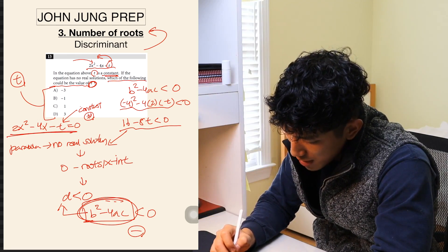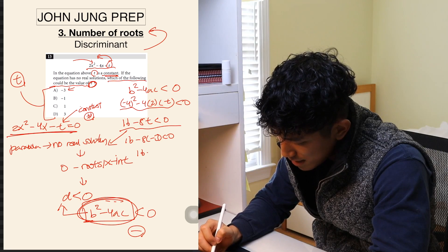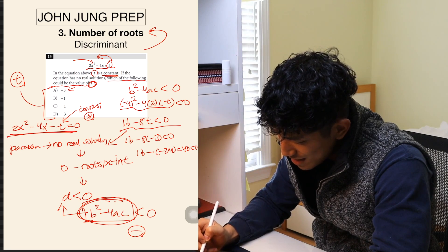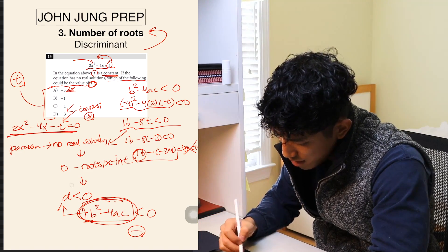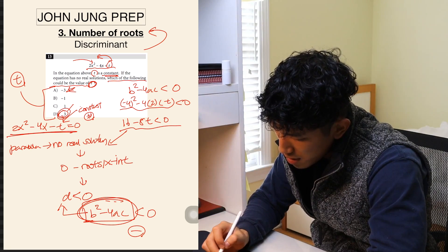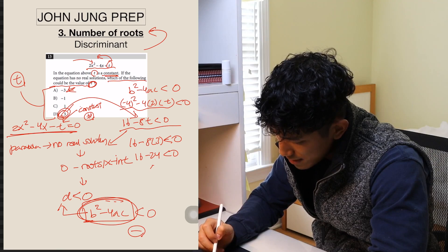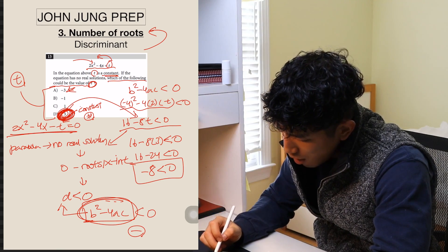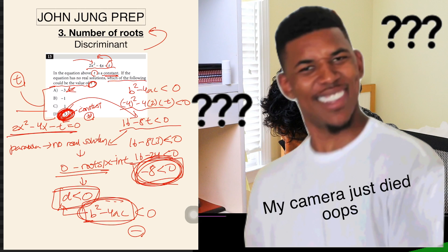Now plug in the answer choices. For choice A, t = −3: 16 − 8(−3) = 16 + 24 = 40, which is not less than zero. Negative values just add to 16, so they won't work. Try choice D, t = 3: 16 − 8(3) = 16 − 24 = −8, which is less than zero. So when t = 3, the discriminant is negative, meaning no roots. The answer is D. Whenever you see a parabola and the question talks about one, none, or two solutions, it's always discriminant.